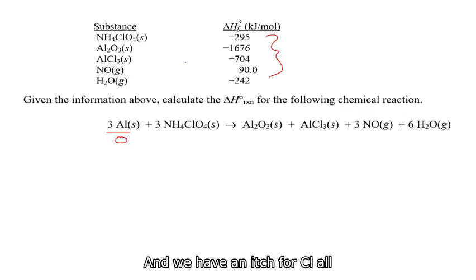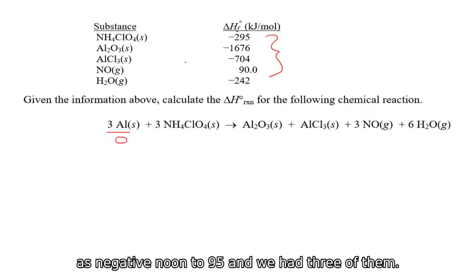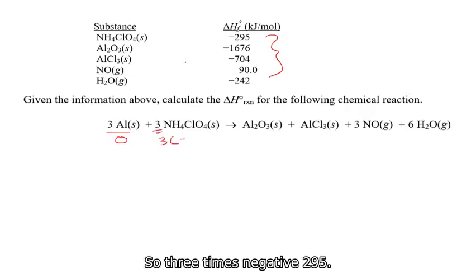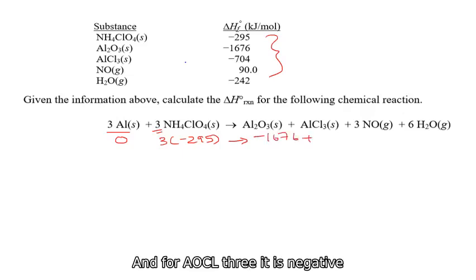So we have this chemical reaction here, 3 aluminum. So delta H for aluminum, we will take it as 0 because it's in the ground state. And we have NH4ClO4. The delta H formation is given as negative 295. And we have 3 of them. So 3 times negative 295.